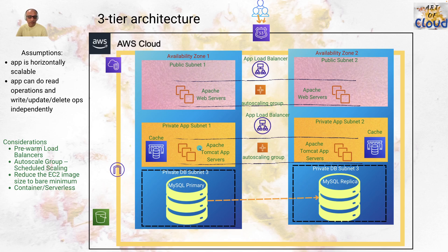The third tier is the database tier. When a user adds an item to a cart, you want to store that information in a database. If something happens to your application server — say it dies for whatever reason — you want to maintain the state of that user's cart, and you typically maintain that state in your database. That's how the three-tier architecture is structured.